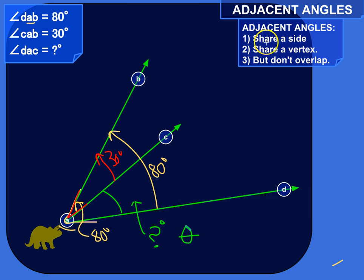So what we can do is we can use the fact that we know how adjacent angles work to set up a little algebraic equation. So adjacent angles are angles that share a side and share a vertex but don't overlap. So angle CAB and DAC are adjacent angles.